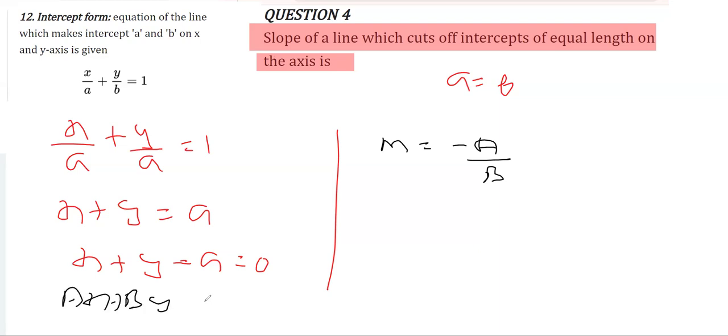We can say that here a is 1, and b is 1 again. So we get m is equal to minus 1. They are just asking for this slope, so we'll say minus 1.